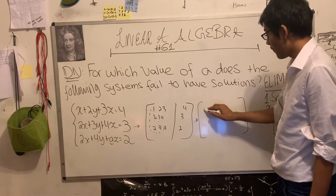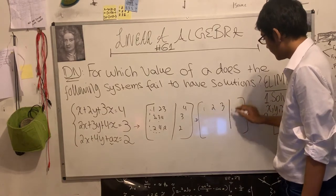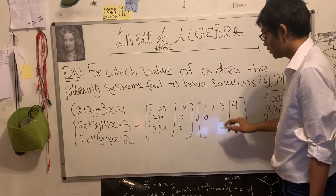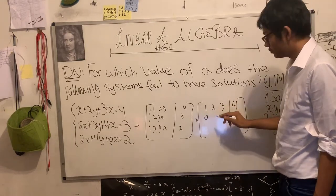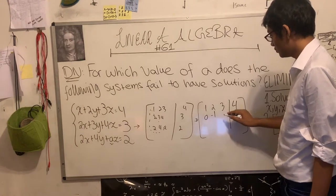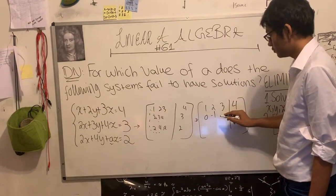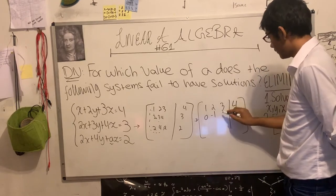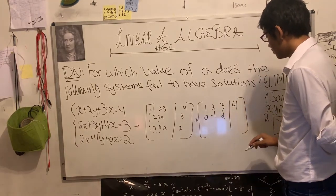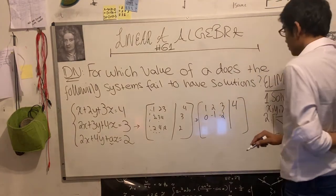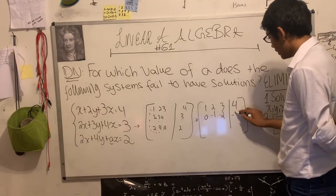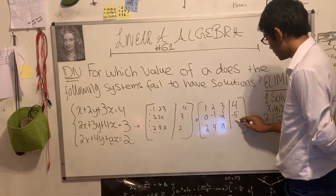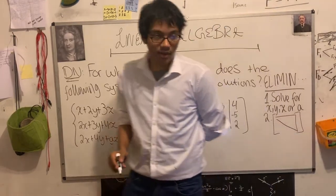How do we achieve upper triangular? By elimination. So what do we have to eliminate? We multiply the first row by negative two. What will the new matrix become? The first row stays 1, 2, 3, 4. The second row becomes 0, negative 1, negative 2, negative 5. And the third row is 2, 4, a, 2.